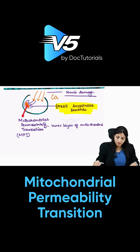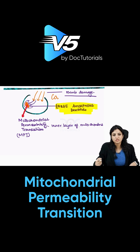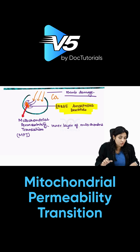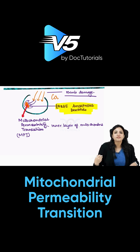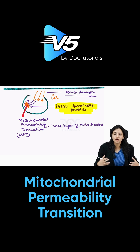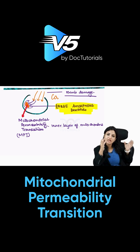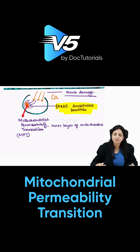Small amorphous densities can be seen in reversible cell injury as well, but when you see large amorphous densities, this is due to formation of mitochondrial permeability transition caused by excess calcium coming inside the mitochondria. This interplay is a classical feature of irreversible cell injury.